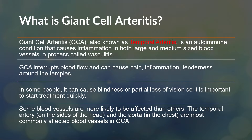In some people, that lack of blood flow can actually cause blindness or partial loss of vision. Because of that, it's really important to identify and correctly diagnose giant cell arteritis as quickly as possible so treatment can be started as quickly as possible to prevent that from happening. There are blood vessels more likely to be affected, particularly the temporal arteries — the arteries on the side of the head. You can also see it in a very large blood vessel called the aorta, the largest one in the body, coming out of the heart.